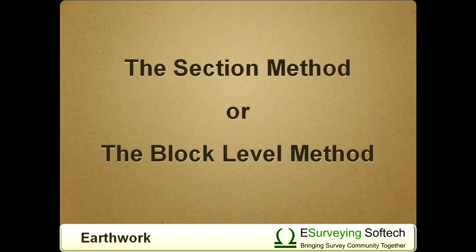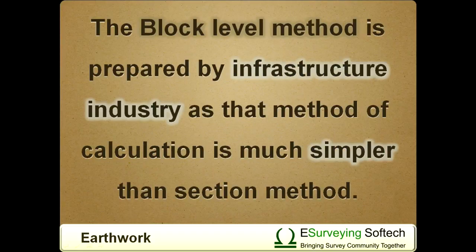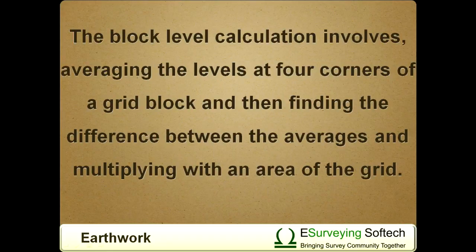Earthwork calculation can be done with the section method or the block level method. The block level method is preferred by the infrastructure industry as it is much simpler than the section method. The calculation involves averaging the levels at four corners of a grid block, then finding the difference between the averages and multiplying with the area of the grid.